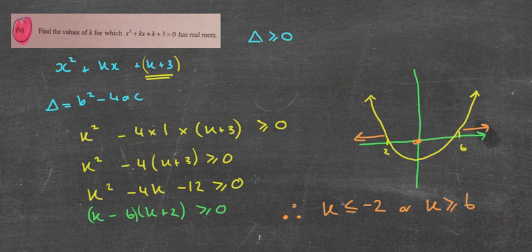If we were looking for no real roots, then it would be between these two values: k greater than negative 2 and less than 6. But it didn't ask us that. It is a bit challenging, but that testing part with the parabola sketch is really crucial.